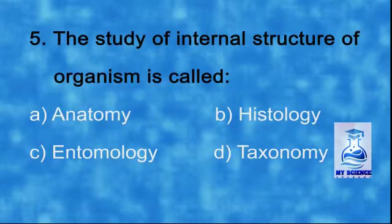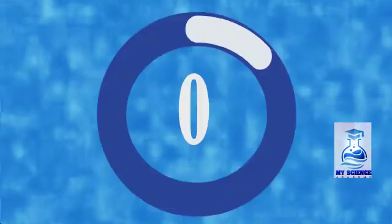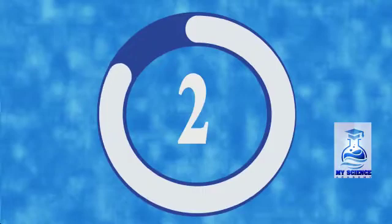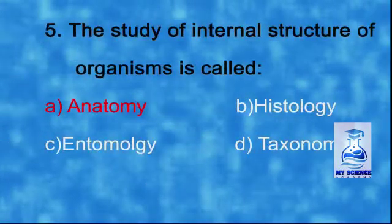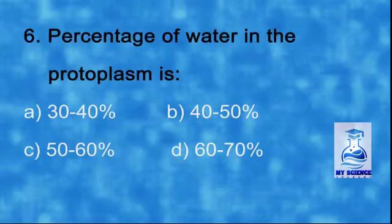Number five: the study of internal structure of an organism is called — a) anatomy, b) histology, c) entomology, d) taxonomy. The correct option is a) anatomy.